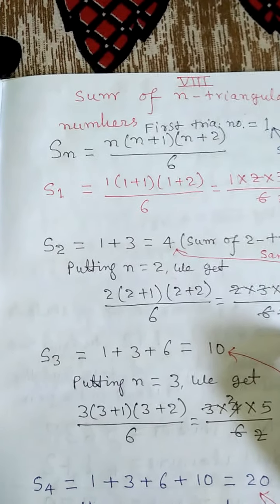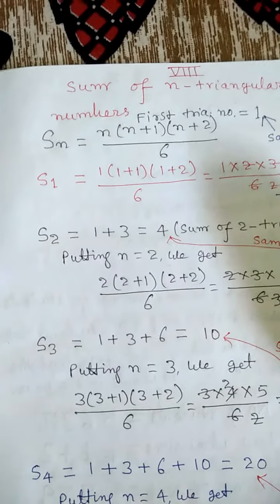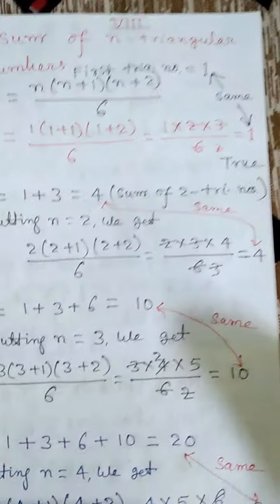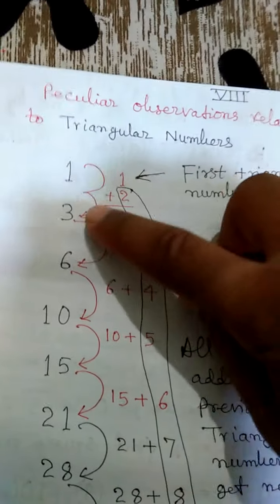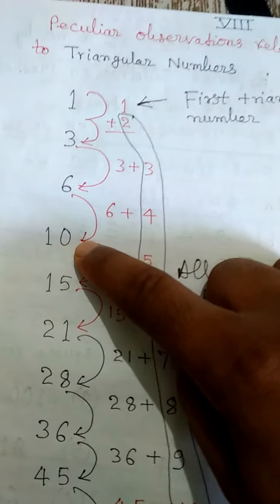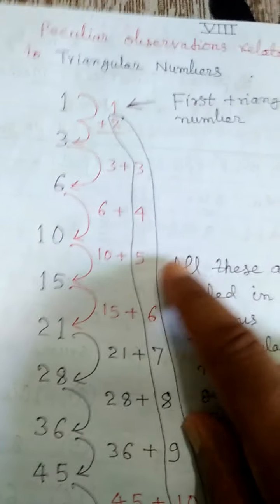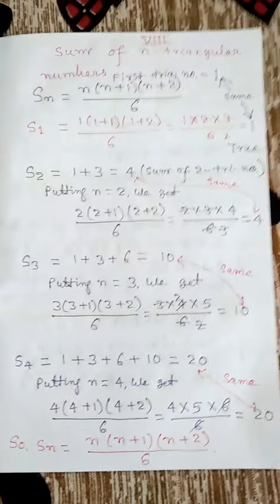Another peculiar observation is that the sum of any 2 consecutive triangular numbers is a square number. The first triangular number is 1 and the second is 3; their sum is 4, which is a square number. 1 plus 3 equals 4, a square number. 3 plus 6 equals 9, which is a square number. 6 plus 10 equals 16, which is a square number. 10 plus 15 equals 25, a square number. 15 plus 21 equals 36, which is again a square number. In this way, the sum of any 2 consecutive triangular numbers gives us a square number.